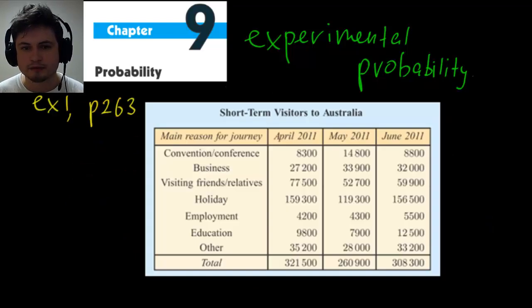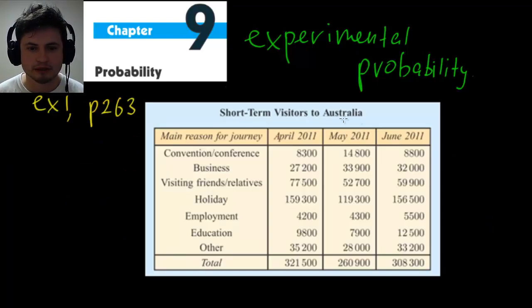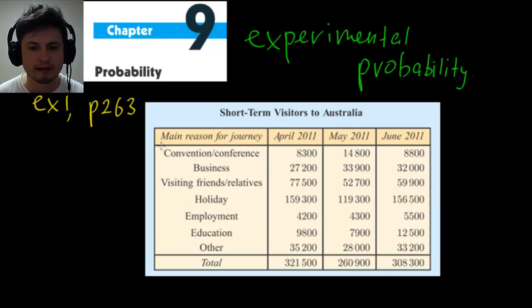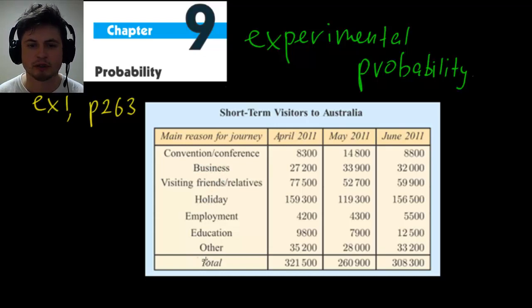This is an example from page 263. It's a table showing short-term visitors to Australia for April, May, and June 2011, with reasons for visiting: convention or conference, business, holiday, education, and so on, plus total visitor counts per month.